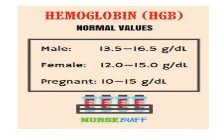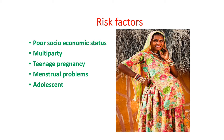What is the normal hemoglobin level? It varies with males, females, and pregnant women. For males, it is 13.5 to 16.5 grams per deciliter. For females, it is 12 to 15 grams per deciliter. And for pregnant mothers, it is 10 to 15 grams per deciliter. The risk factors include poor socio-economic status people.